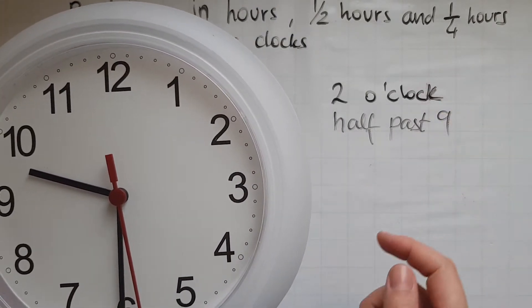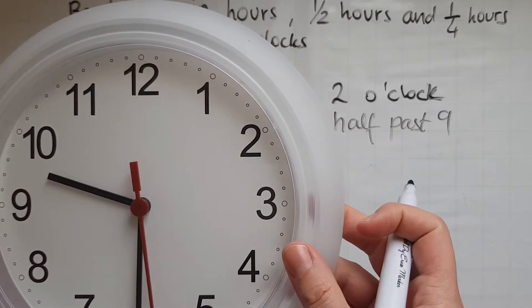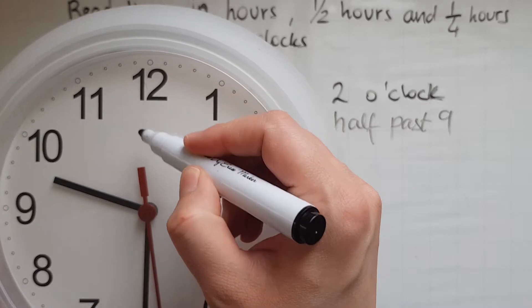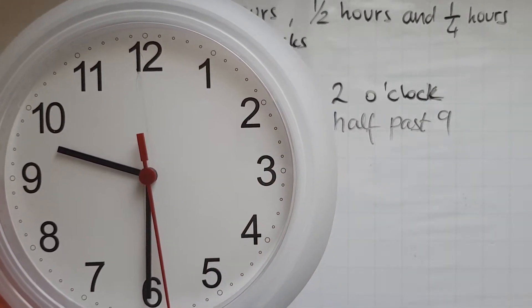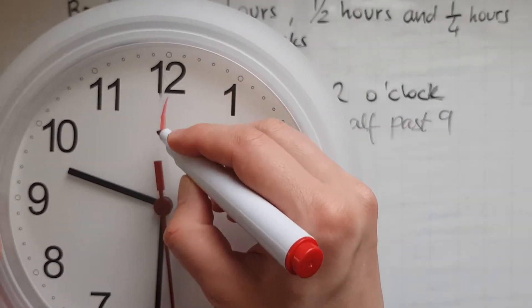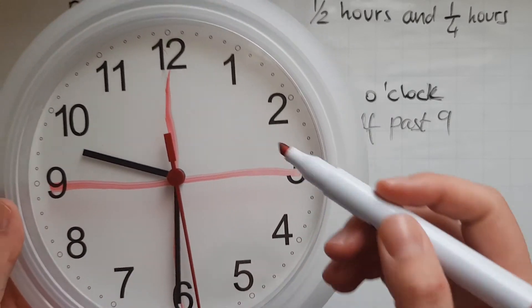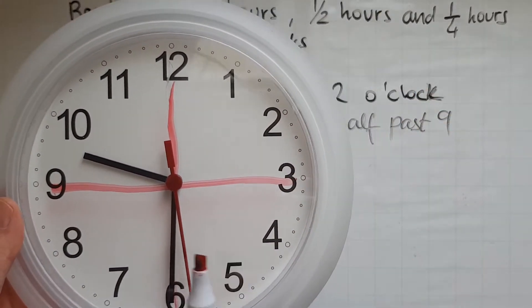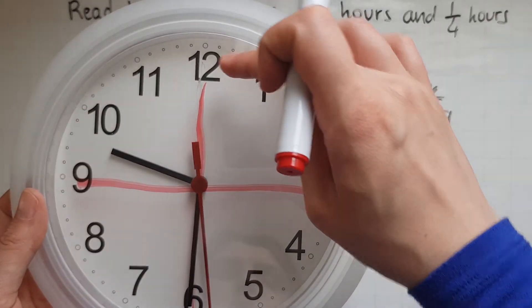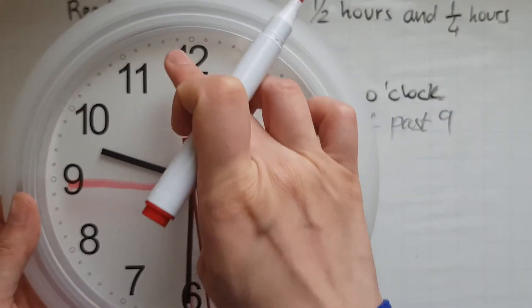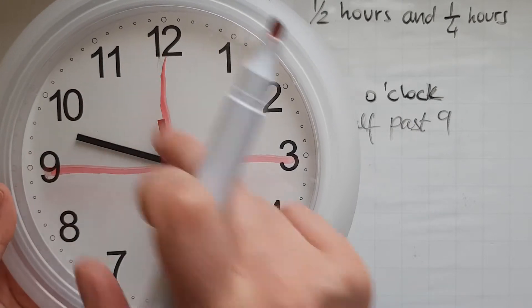So that explains half an hour. But what is a quarter of an hour? Quarter — as we've looked at before when we looked at fractions — half looked like this, and quarter looked like this. So this is a quarter, this is a quarter, this is a quarter, and that is a quarter. So a quarter of an hour is a quarter turn — from twelve to three, from three to six, from six to nine, from nine to twelve.